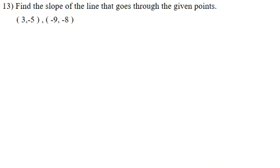We're looking at question number 13, and it's asking us to find the slope of the line that goes through the given points. We are given the points 3, negative 5, and negative 9, negative 8.